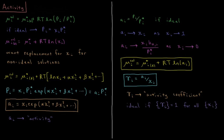This video will discuss activity in liquid-liquid solutions. If we want to know the chemical potential of a given component in a liquid solution, that is given by the chemical potential of the pure liquid of that component at the same temperature and pressure, plus the gas constant times the temperature times the natural log of the vapor pressure of that component divided by the vapor pressure of the pure liquid of that component at the same temperature and pressure.